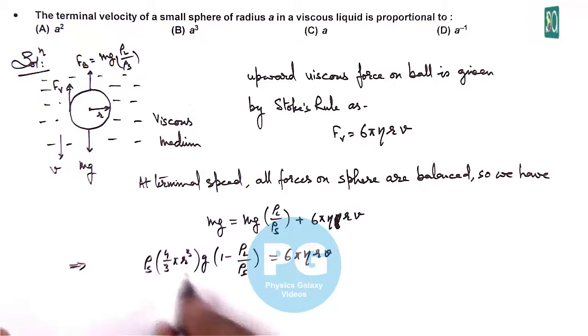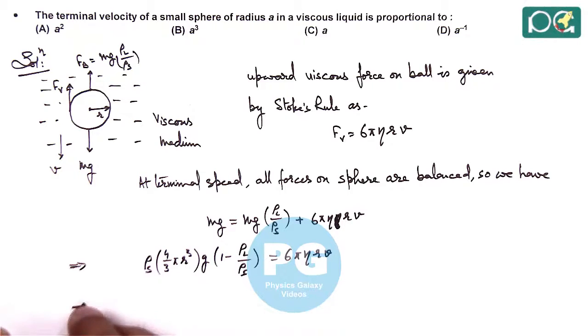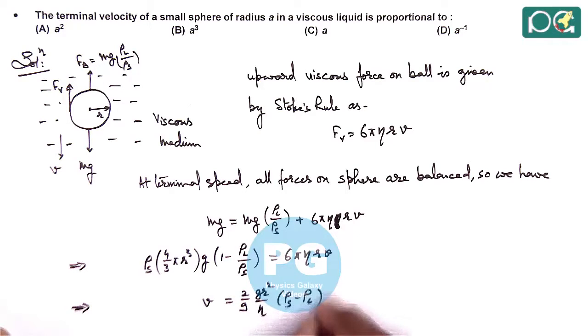So rearranging terms, this gives us the terminal velocity is equal to 2 by 9 gR² by η (density of solid minus density of liquid). This formula we have already derived in theory, and if you have a look at this it is giving us that terminal velocity is directly proportional to square of radius.